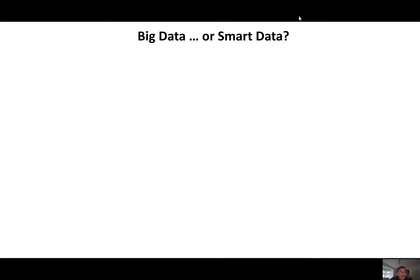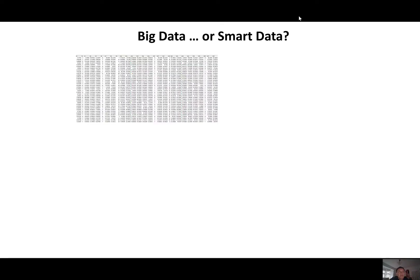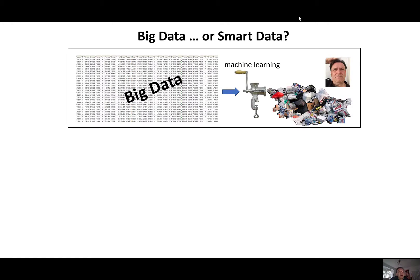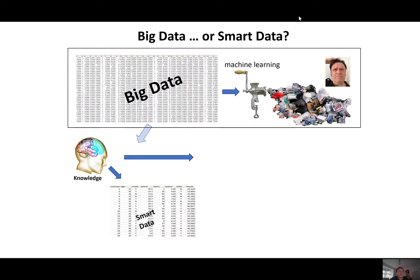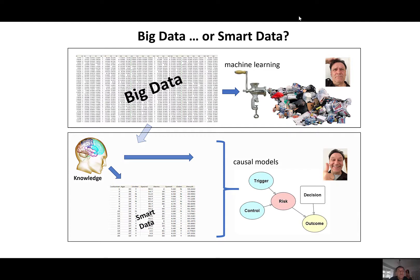That's why we argue for a smart data approach rather than a big data approach. If you focus on big data and throwing it at machine learning algorithms, most of the time you'll end up with garbage, especially if you attempt anything beyond step one on the AI ladder. But if you use causal knowledge to elicit the right data, you can usually use much smaller datasets and causal models to get to levels two and three of the ladder.